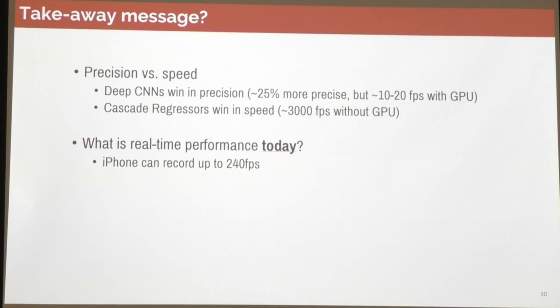If you think about what real-time performance means today — we used to think it was 25 or 35 fps, but your iPhone can record over 200 fps. If your method doesn't operate in that domain, you're losing out. That said, facial expression muscles have mechanical time constants, so around 100 fps would be just fine for face analysis. Eye movements like saccades can be really fast, but for face analysis you wouldn't need more than 100 fps.